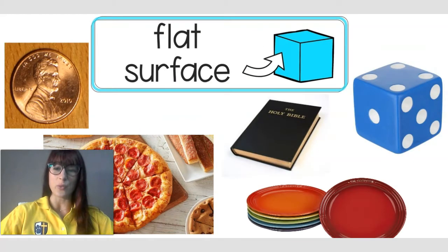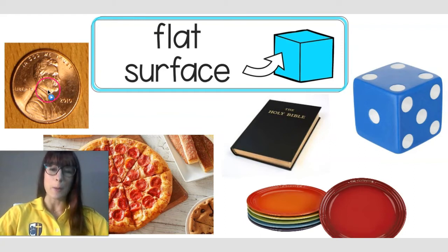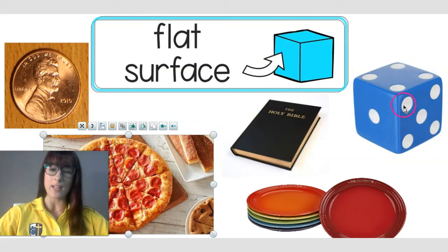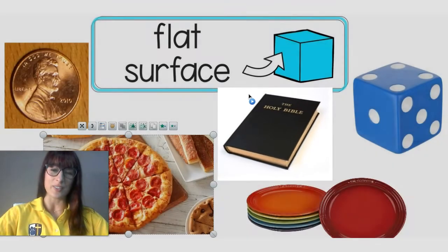If you look around yourself, you will probably identify a variety of objects that have flat surfaces. I have some here for you. This coin right here has a flat surface — if you place your hand over it, your hand is flat. Pizza is a flat surface, and the board under the pizza is also a flat surface. Dice has many flat surfaces, and these plates also have flat surfaces. And if you touch the Holy Bible, you will also feel the flat surface of this precious book.